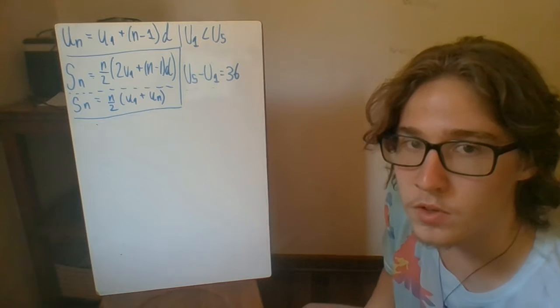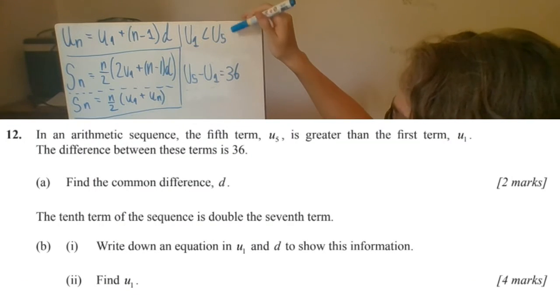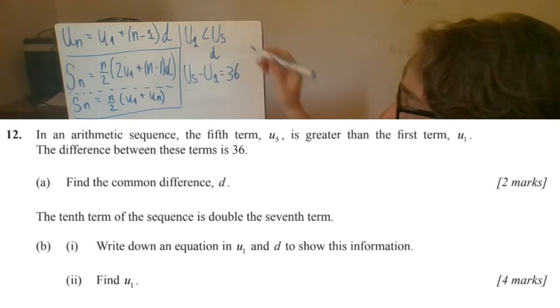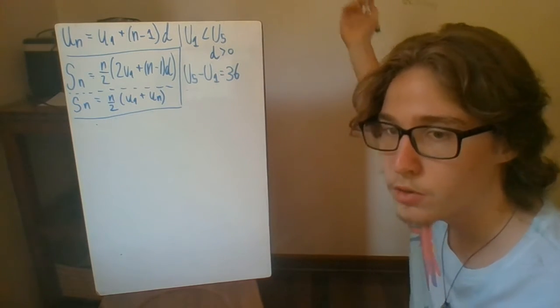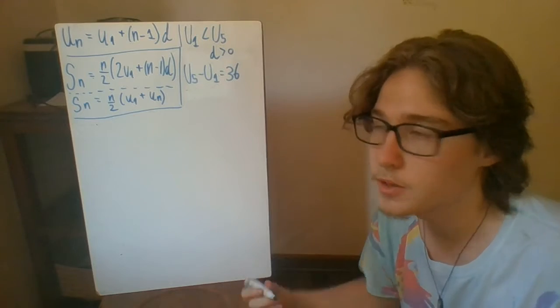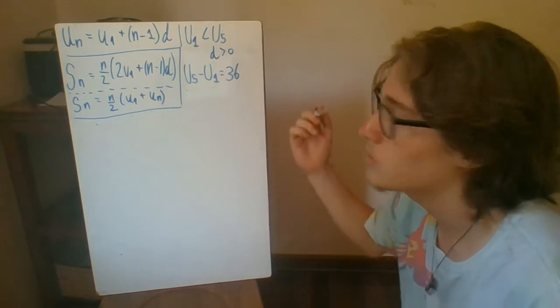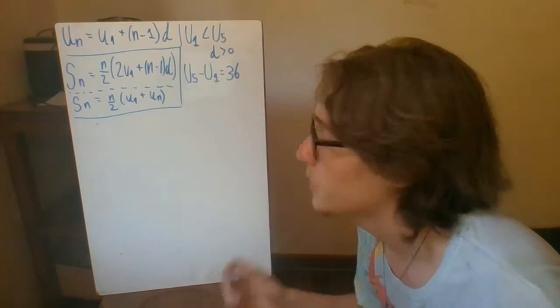So the problem gives us that the fifth term u5 is greater than u1, and this immediately implies that d, when you're playing your sequence with that each time you change from one term to the next, has to be greater than zero, because if the term farther away is greater than the first one, then you have to be adding something. So d has to be greater than zero. You can't be subtracting in this example.